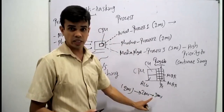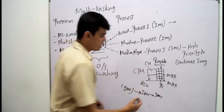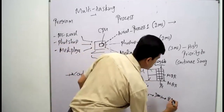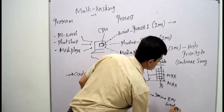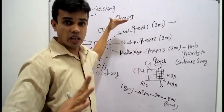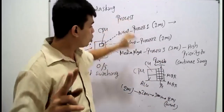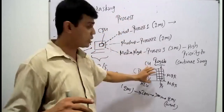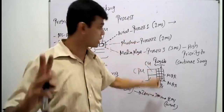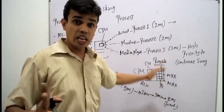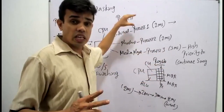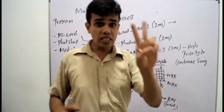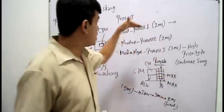After Media Player's three milliseconds, what is the next chance? Word is given the chance again for two milliseconds. So first two milliseconds Word goes to the CPU, then it leaves, then Photoshop is assigned two milliseconds, then Media Player is assigned three milliseconds since it has higher priority. Then the chance comes to Word again at the second time.